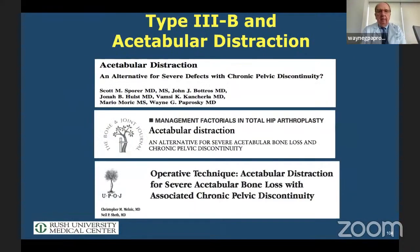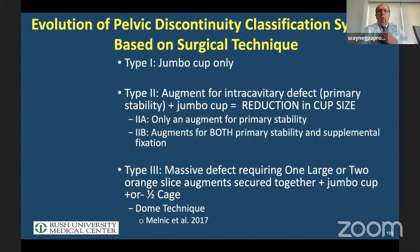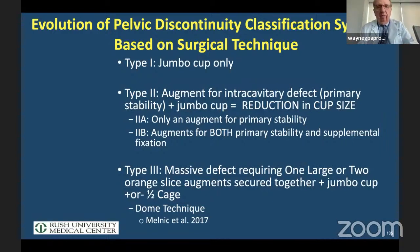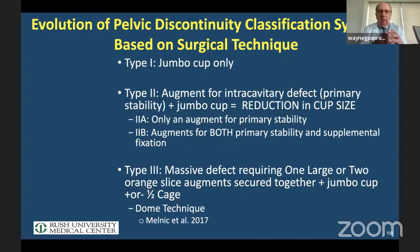This is my go-to implant and we've had several publications involving these cases. When we have a discontinuity, I classify these into surgical technique. Type one: just a jumbo cup only. Type two: reduce cup size using augments to get primary stability. Type three: massive medial augments — what we call the dome technique. In each of them we're using a distraction technique, but the technique is different for each.